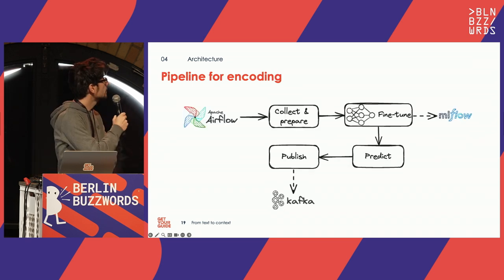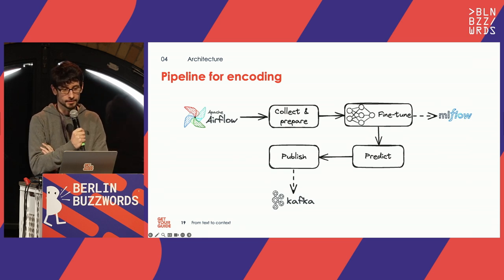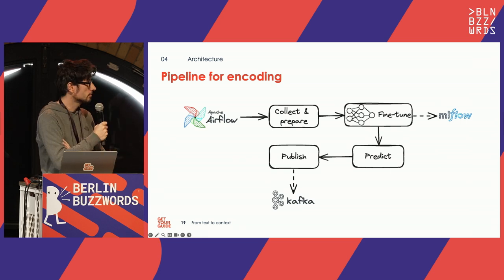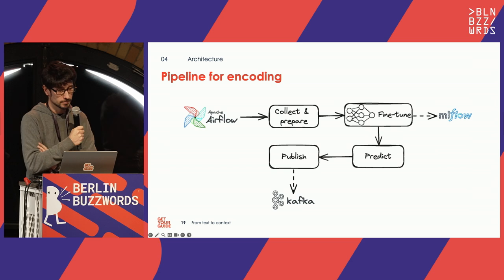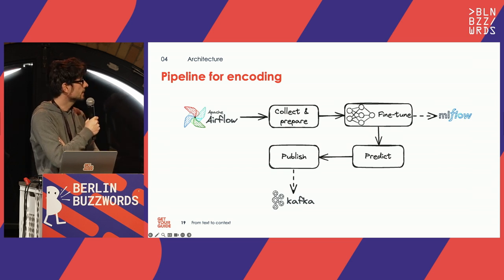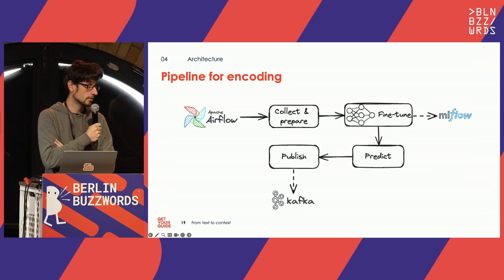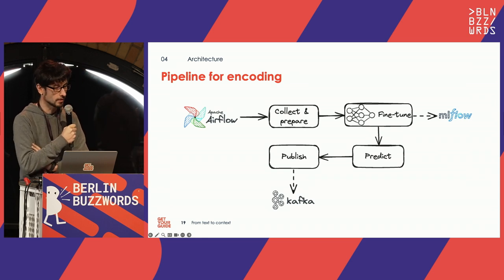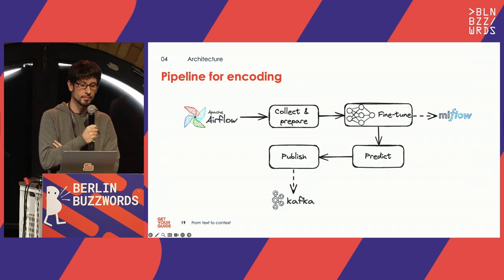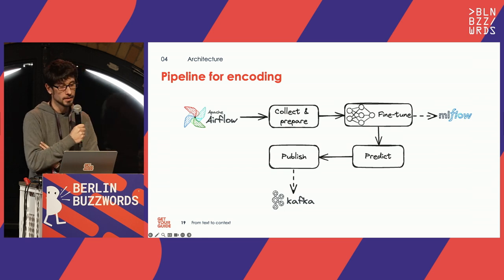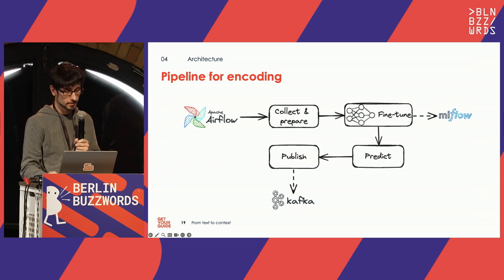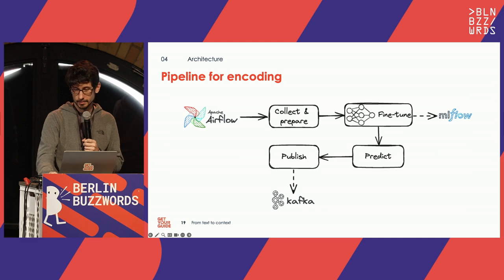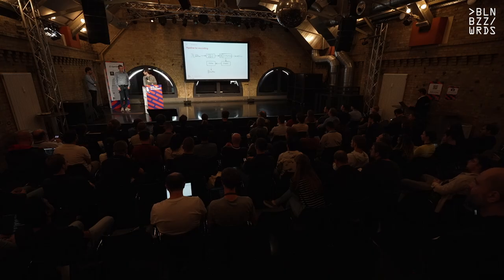For the offline encoding job: it's scheduled by Airflow. We collect and prepare data, fine-tune the model on Get Your Guide-specific data, save and store the model in MLflow, then use it to encode the catalog and publish the encodings via Kafka for search to process and inject into OpenSearch. That's the technical side — passing it over to Angsgar.